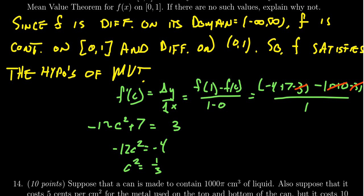And then taking the square root we get c = ±1/√3. Now 1/√3 which is positive will be in the interval [0,1] but the negative is not. That's outside the interval.